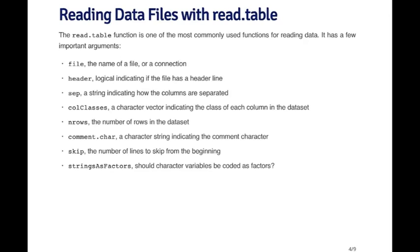nrows is the number of rows in the dataset. This is not required, but it can be used. comment.char is the character string that indicates what's the comment character. The default, for example, is the pound symbol or the sharp symbol. Anything to the right of that symbol is ignored. You can specify other characters to be comment characters, and the lines of the file that begin with that comment character will be ignored.